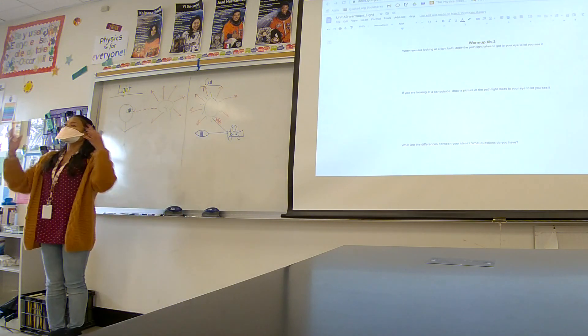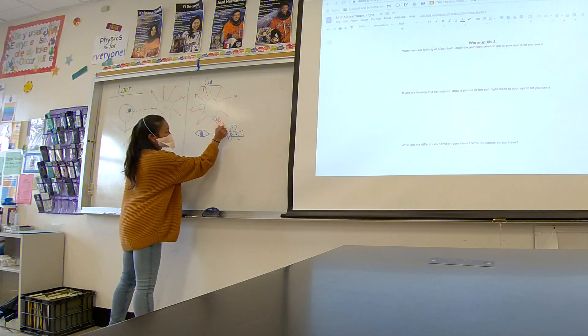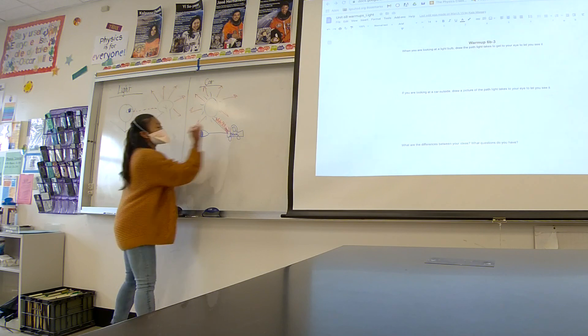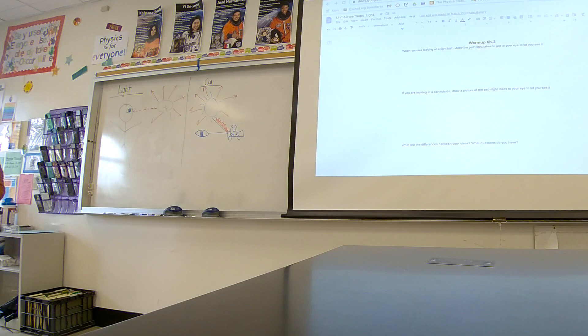Remember white light contains all the colors of the rainbow, of colors. So in order to see blue what needs to be reflected and what needs to be absorbed. Vincent?